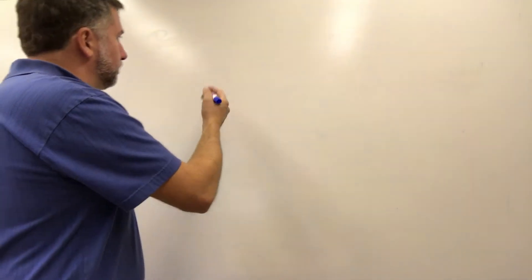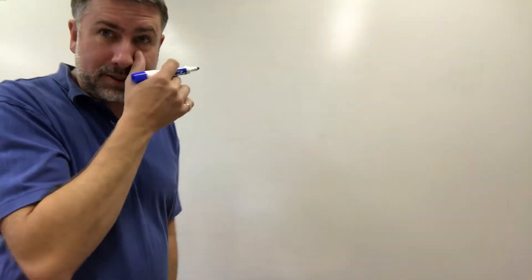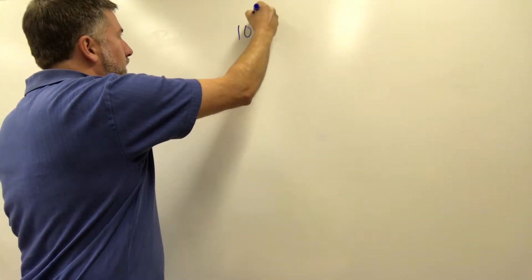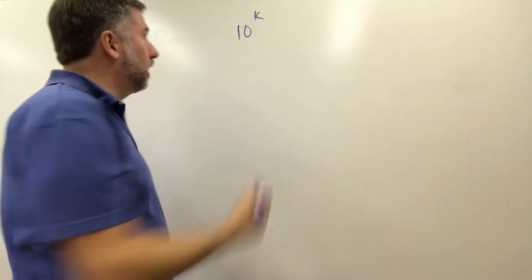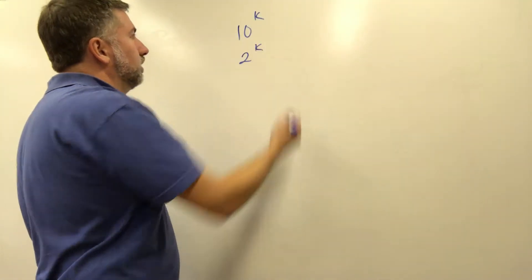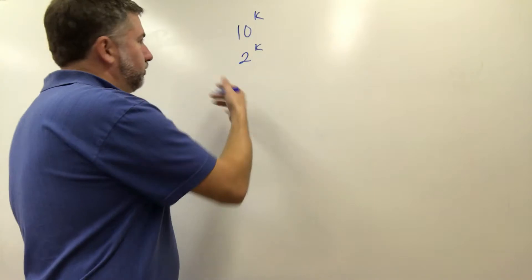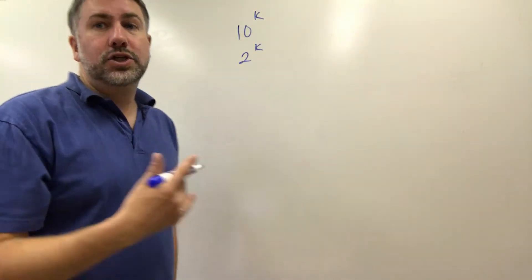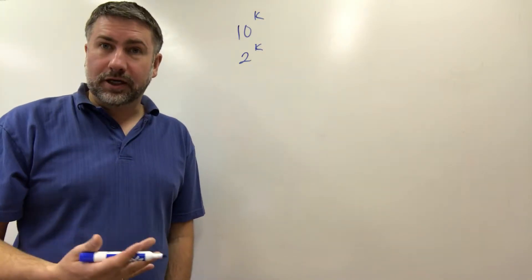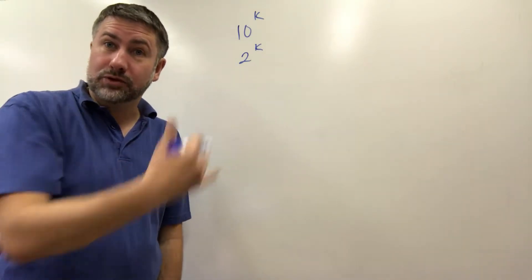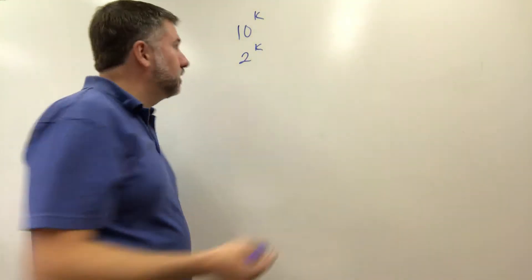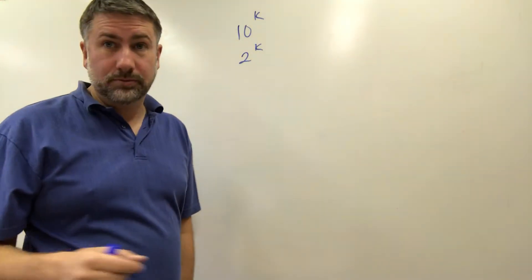So in base two, well in any base if we expand this idea because now we've got base ten, ten to the power of something and we've also got base two, two to the power of something. We can have any base. We can have base seven numbers or base thirteen numbers or base a million numbers. It doesn't matter. Each base that you're talking about needs that many symbols to represent. Base ten numbers needs ten symbols to represent. Base two numbers needs two symbols to represent.